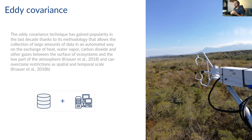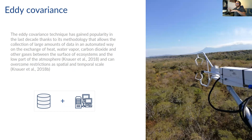One technique to measure the fluxes from the forest is called eddy covariance. It has gained popularity in the last decade because it's a methodology that allows collecting large amounts of data in an automated way — for example, exchange of heat, water vapor, carbon dioxide and other gases between the surface of the ecosystem and the lower part of the atmosphere. You can get pretty detailed spatial and temporal scale resolution.